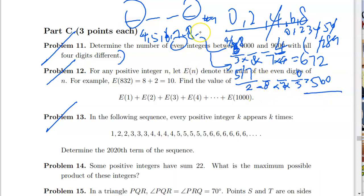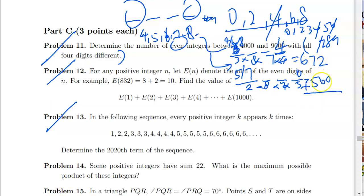These are all the cases — no need to count one by one, which would be very tedious. So 672 + 560 = 1232, which is our answer for problem 11. Do it mentally since most olympiad problems are designed to be solved without a calculator.